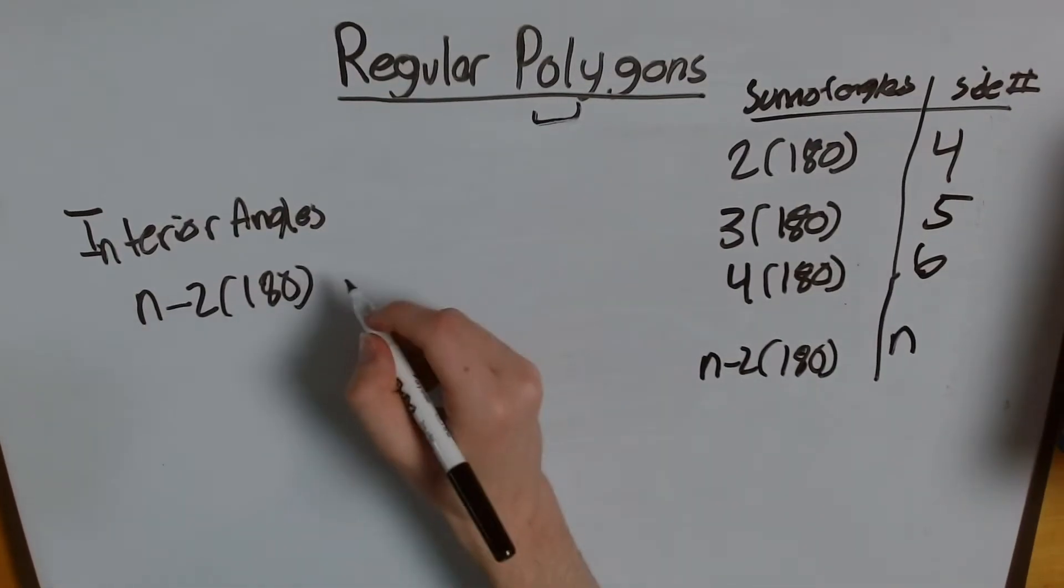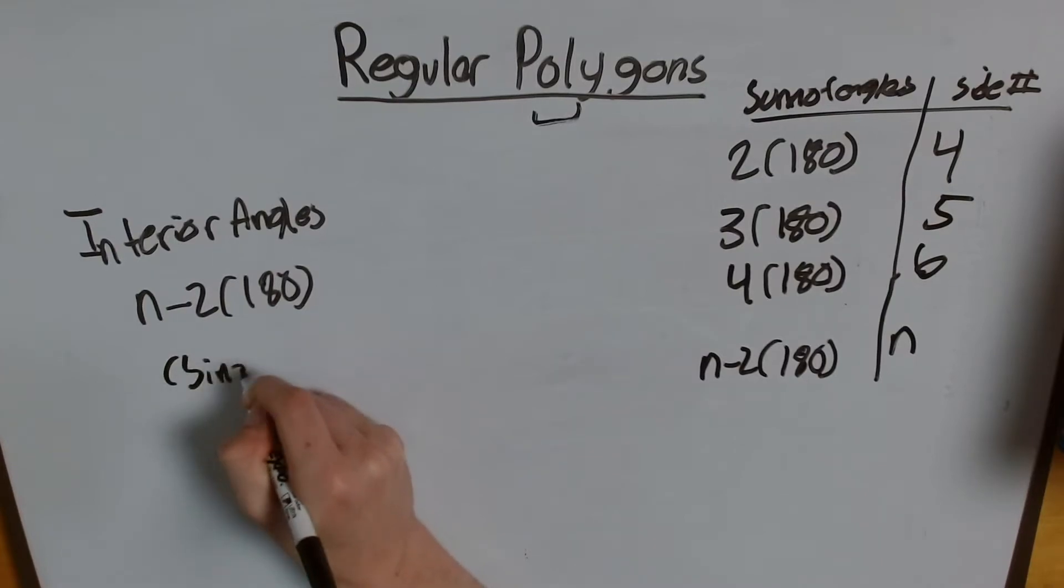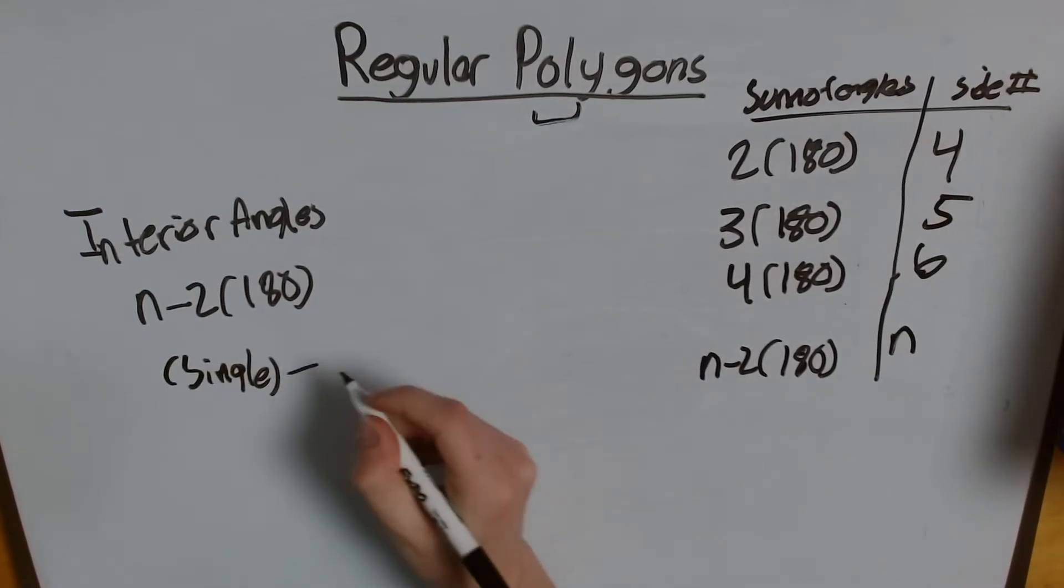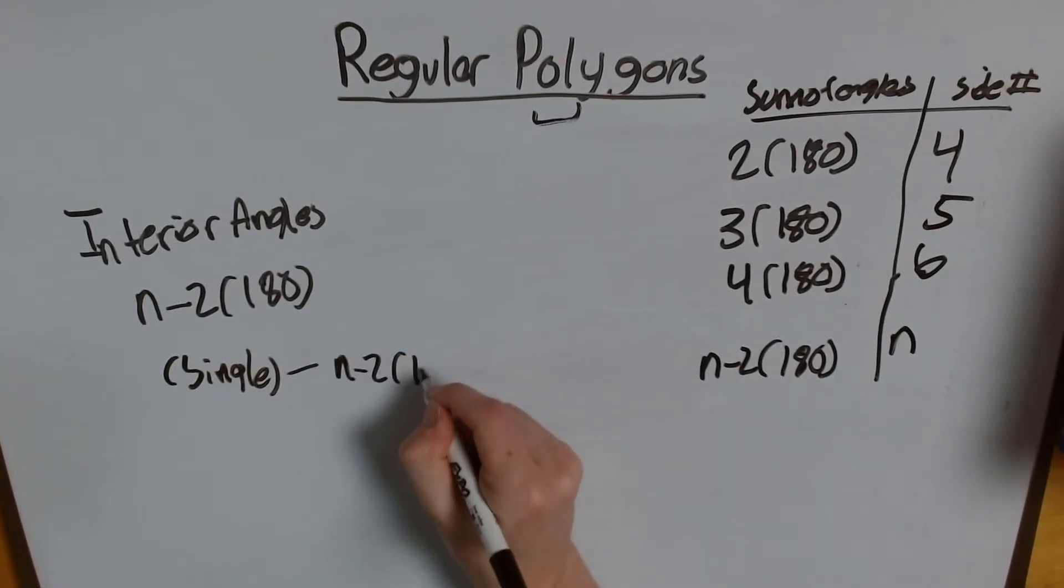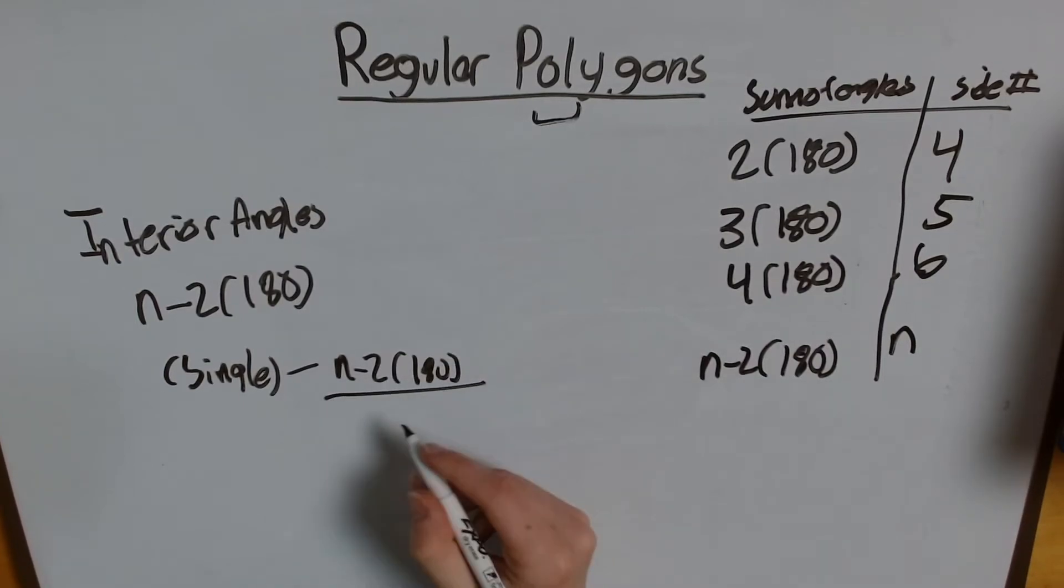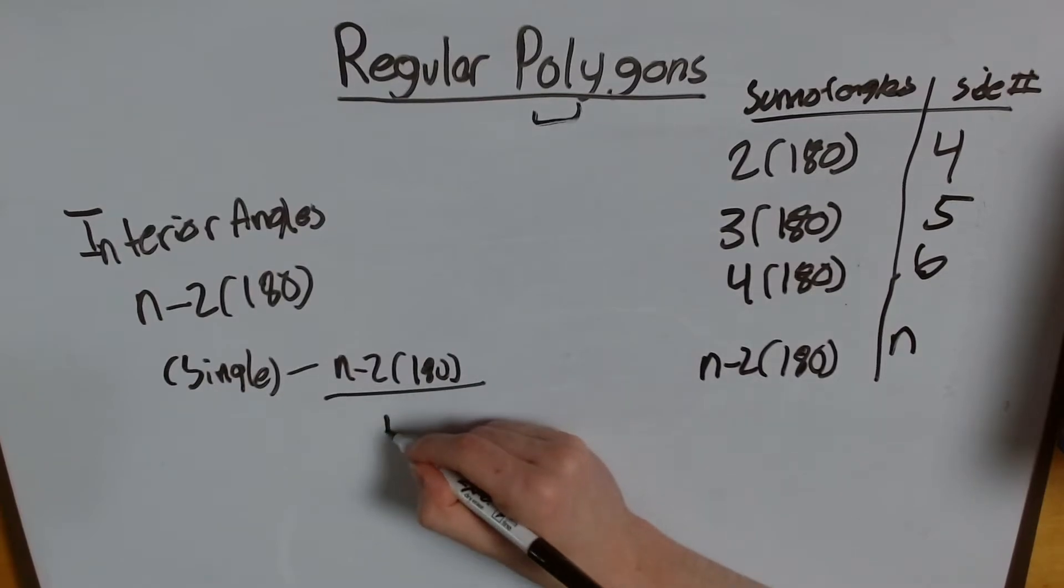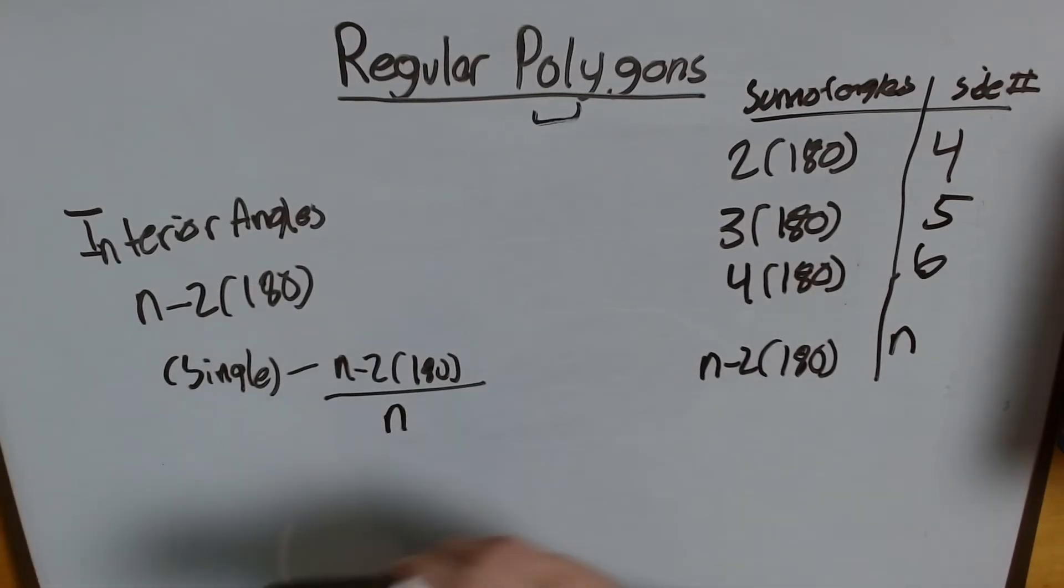So, I'm going to say, in parentheses, single. Well, that's going to be n-2 times 180, divided by the number of angles that we have, which is, of course, going to be n. So, that's all well and good.